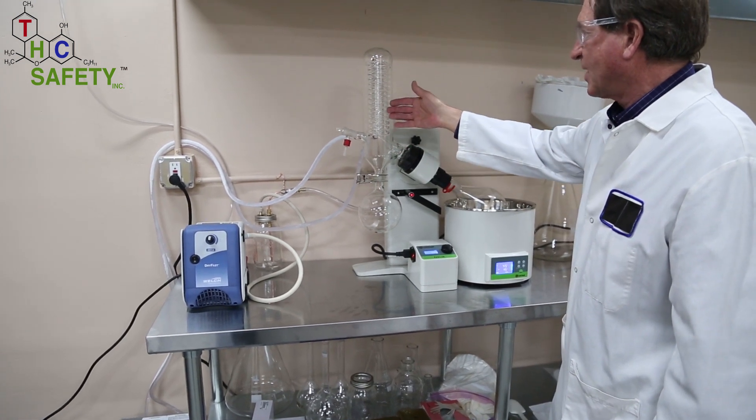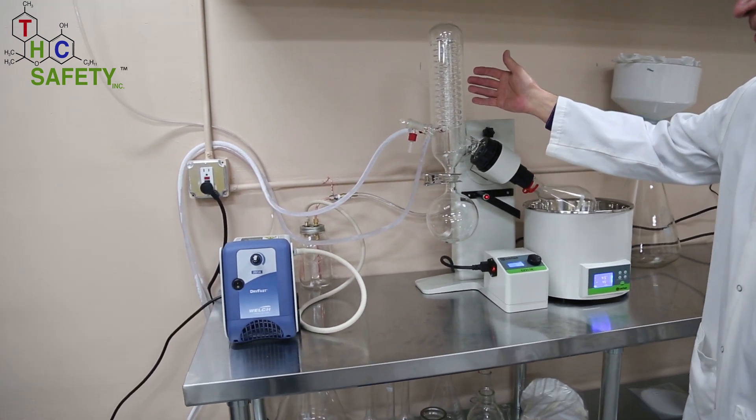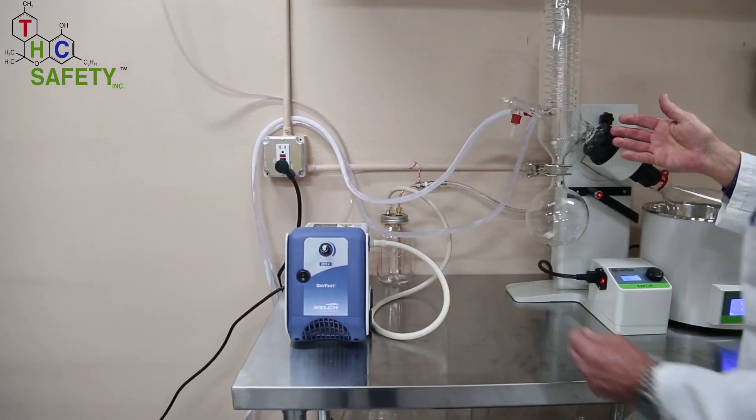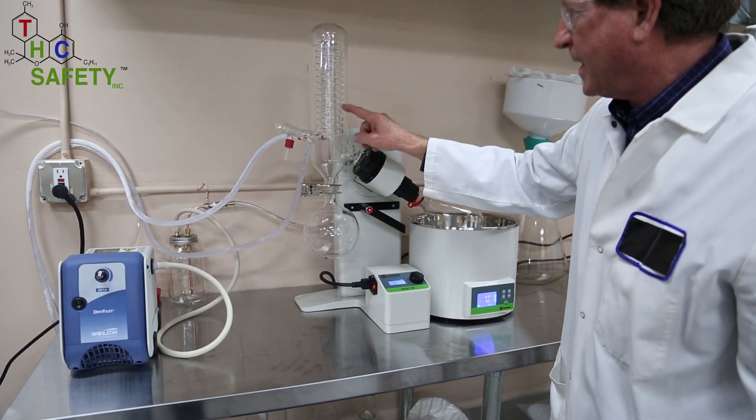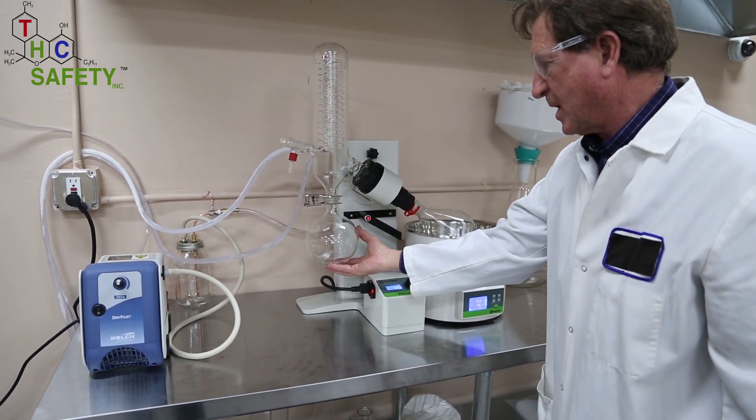The vapor is going to travel up into this condenser coil. The condenser coil is being chilled by the chiller. The vapor will condense on the surface and drop down into this reservoir.